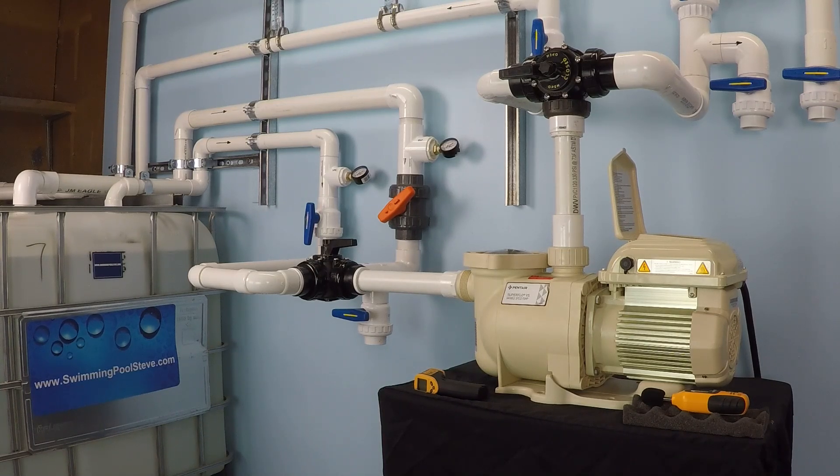In this bench test of a SuperFlow variable speed pump from Pentair, we're going to be looking at the flow rate versus electrical consumption for this pump running at variable speeds, variable motor RPMs. The plumbing system on this specific installation is simulating two inch and a half suction lines and a single inch and a half return line.